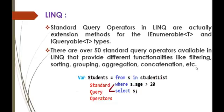Coming to the second point, you can observe there are over 50 Standard Query Operators available in LINQ that provide different functionalities like filtering, sorting, grouping, aggregation, and concatenation. If you are querying a list or a collection, LINQ Standard Query Operators are going to provide you some operators based on the functionality you require.